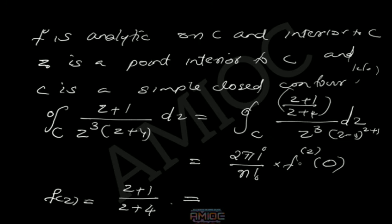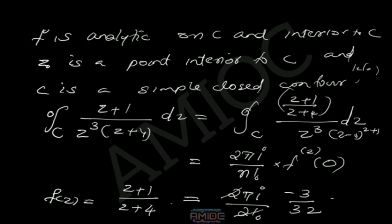Substituting the value of the second derivative of f at z = 0 into the equation, we have (2πi / 2!) · (−3/32). Since 2! = 2, the 2's cancel, giving a final answer of −3πi/32. Hence, the value of the contour integral is −3πi/32.